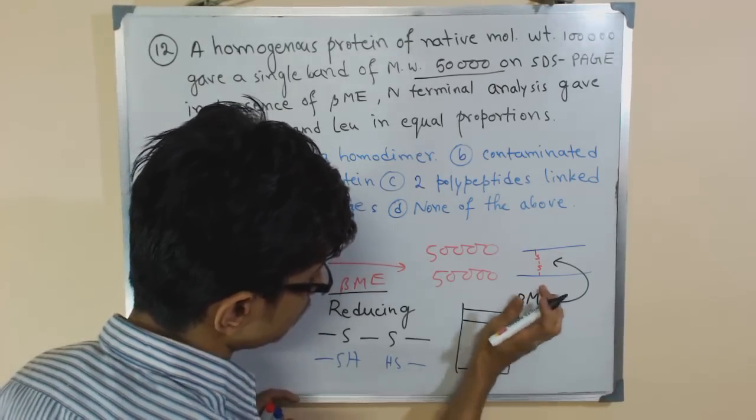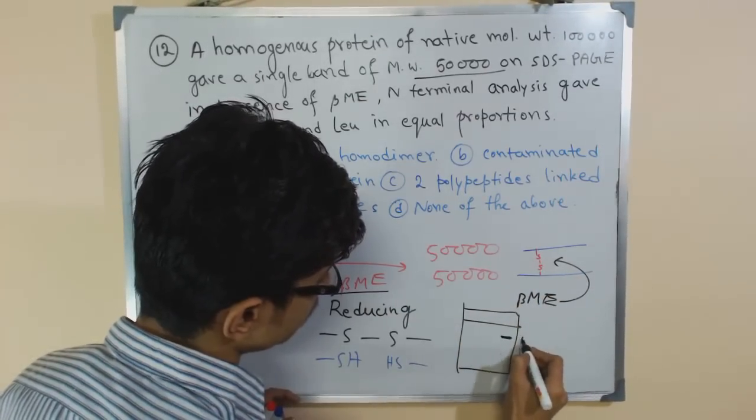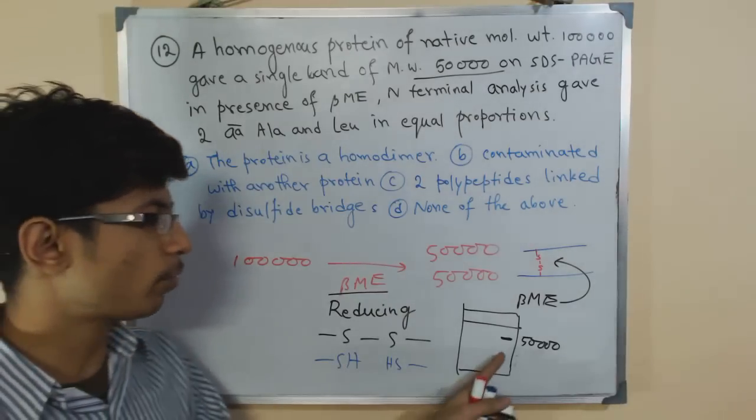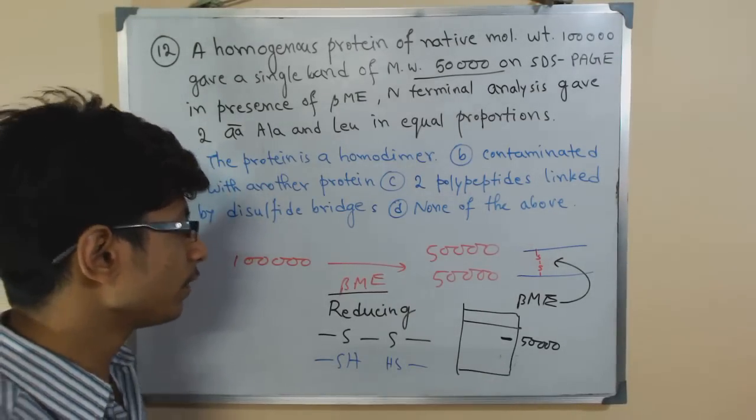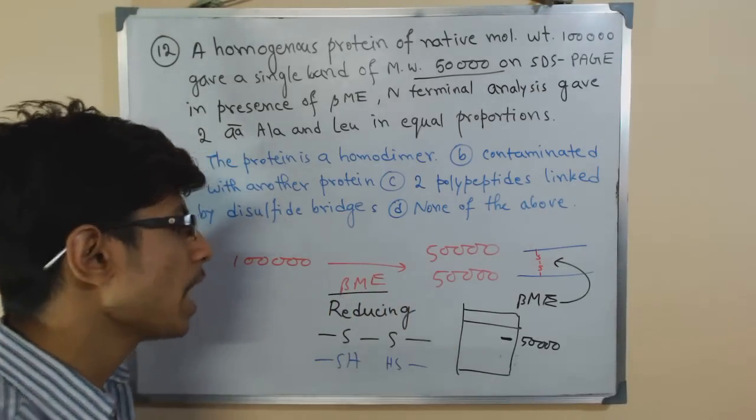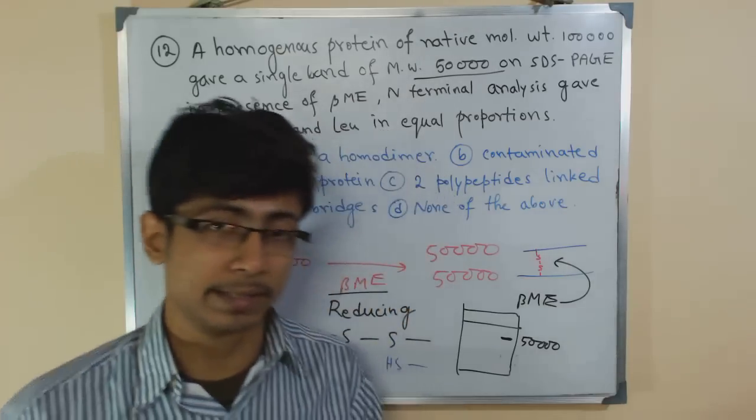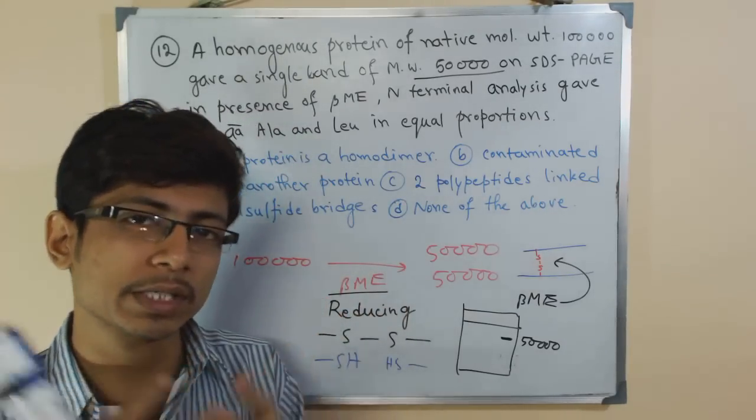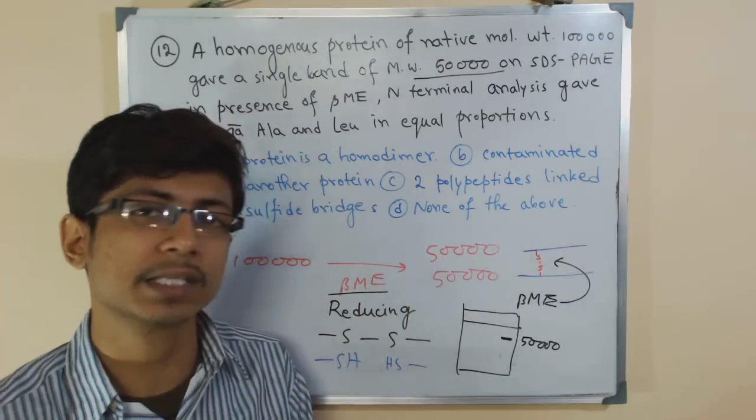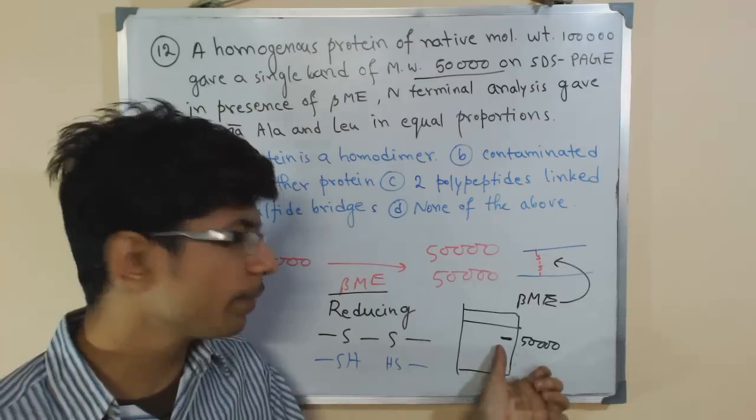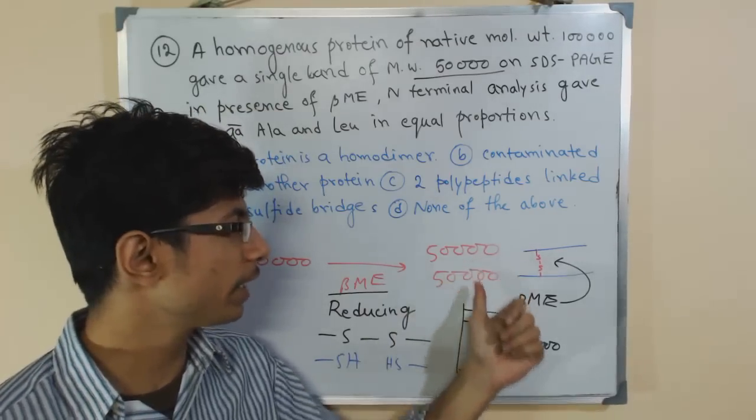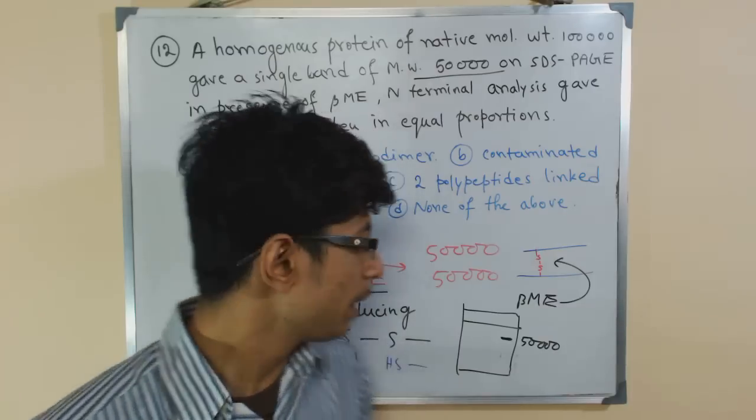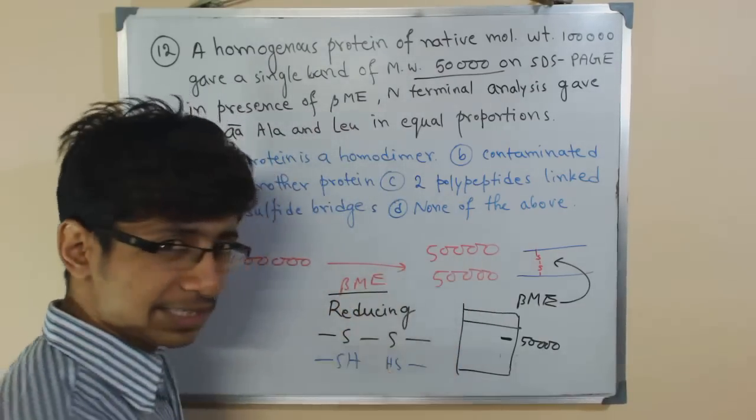We get one band only. So what does that suggest? Definitely beta-mercaptoethanol break them apart. Now one important thing that I am telling, many people mistake that if this 1 lakh molecular weight containing protein is cleaved into 50,000 Dalton molecular weight proteins, we get one band or two, because two different chains are there, but the answer is we will get only one band. Why? Because the molecular weight is the same.